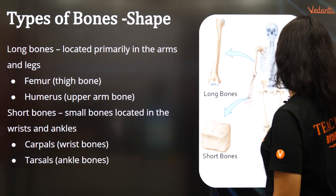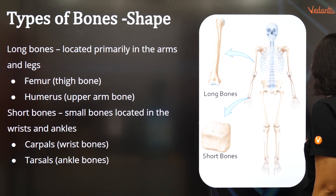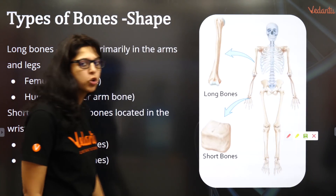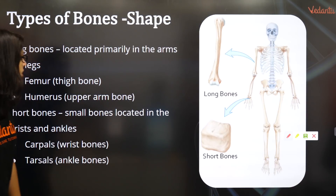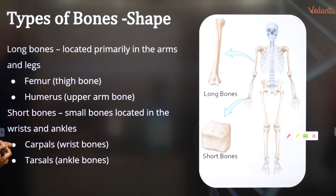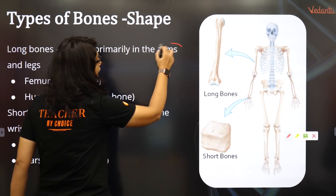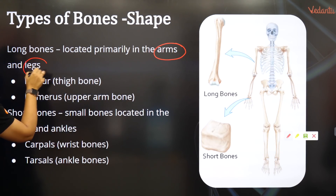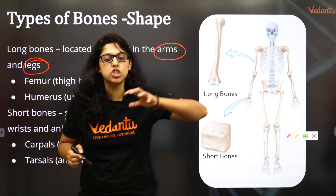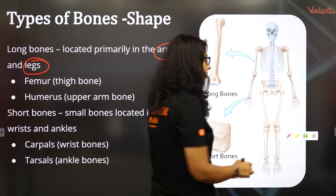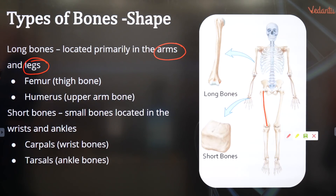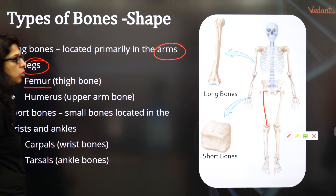So types of bones: there are long bones, short bones, irregular bones, and seed-shaped bones. Long bones are most prominently and primarily located in the arms as well as in the legs. This is the bone of the arm — which are long. These are the leg bones. Such a long bone. So the long bone of the thigh is referred to as the femur.